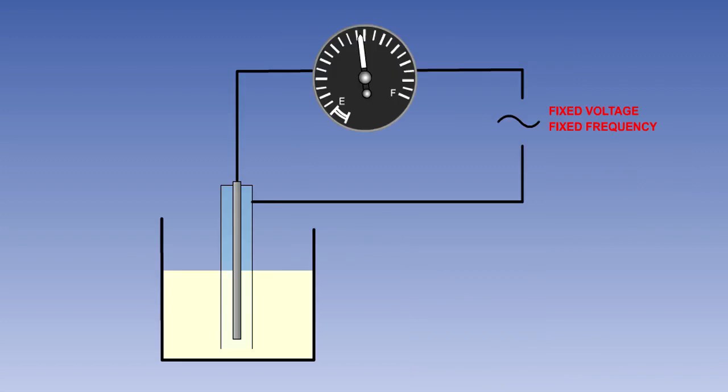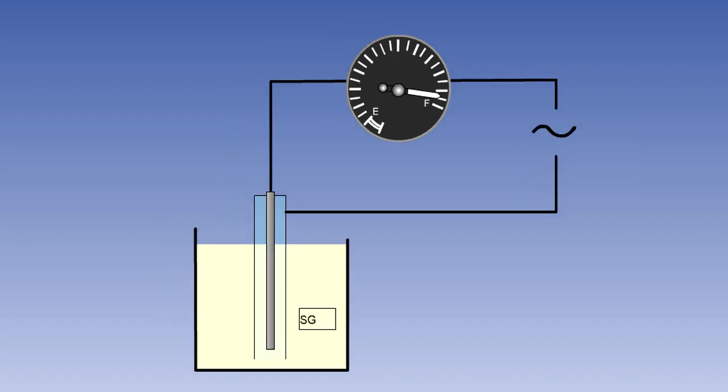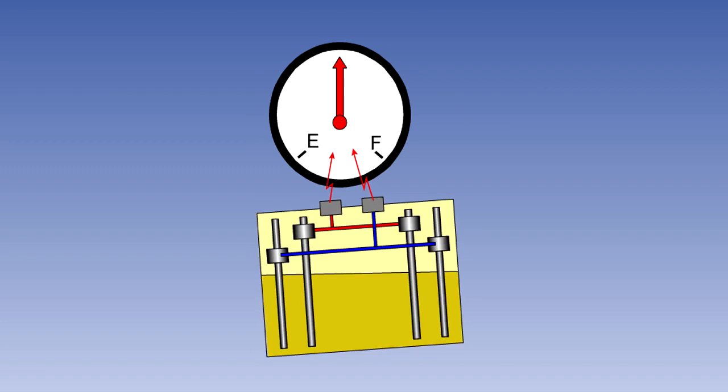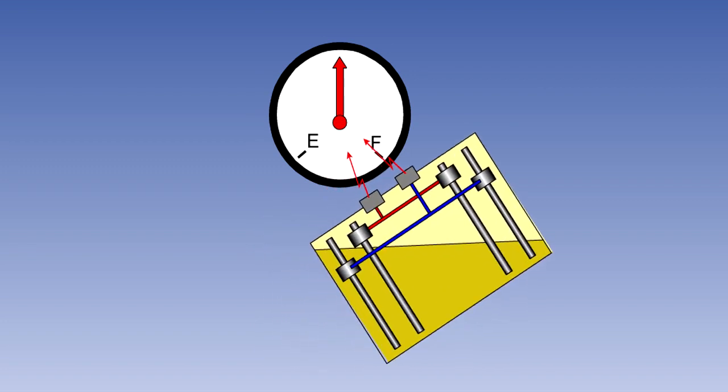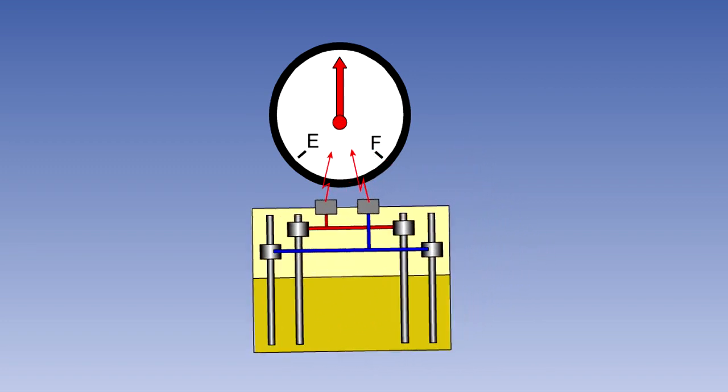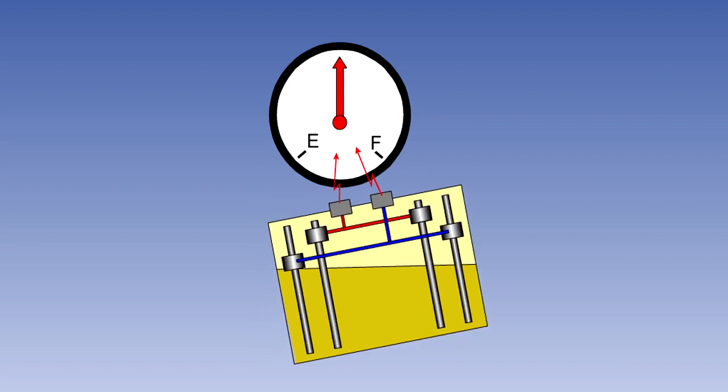Most large aircraft use a capacitance type of system, which uses the difference between dielectric qualities of air and fuel to measure the quantity of fuel in the tank. This type of system is unaffected by specific gravity changes. And by using numerous detectors in the tank, it does not suffer from maneuvering error.